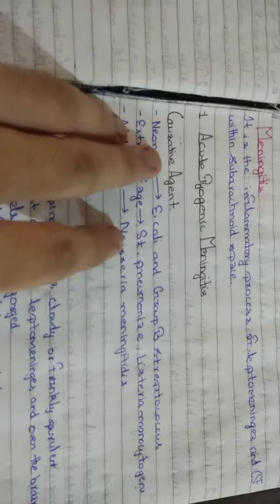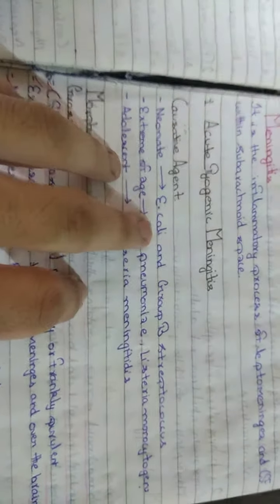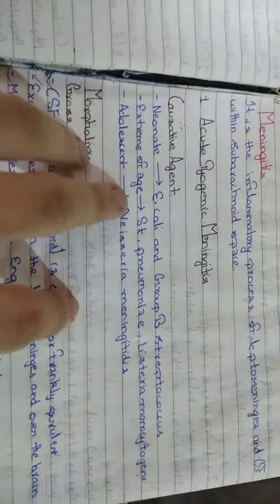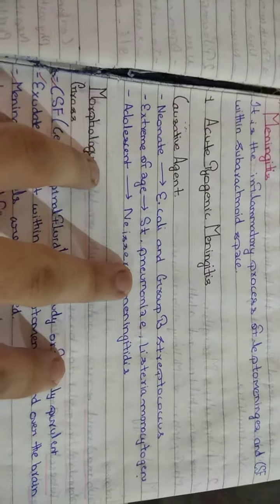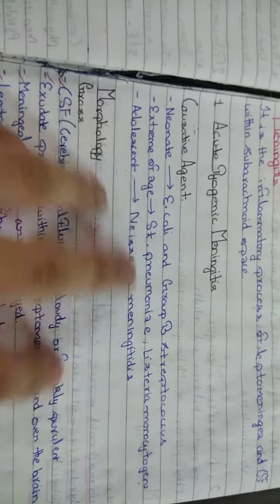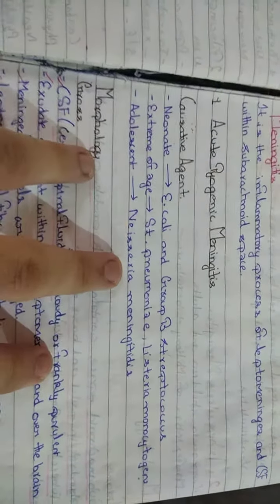Acute pyogenic meningitis causative agents: in neonates it is caused by E.coli and Group B Streptococcus; in extreme of age it is caused by Streptococcus pneumoniae and Listeria monocytogenes; and in adolescents it is caused by Neisseria meningitidis.